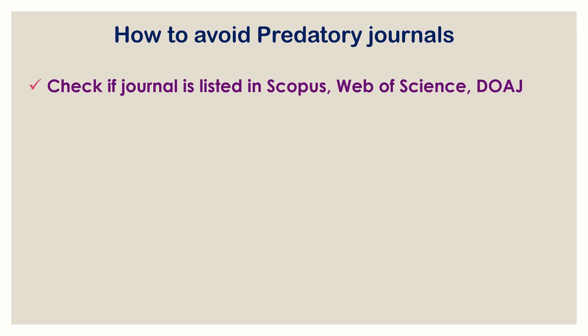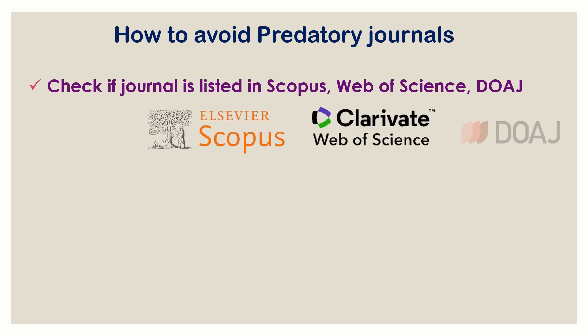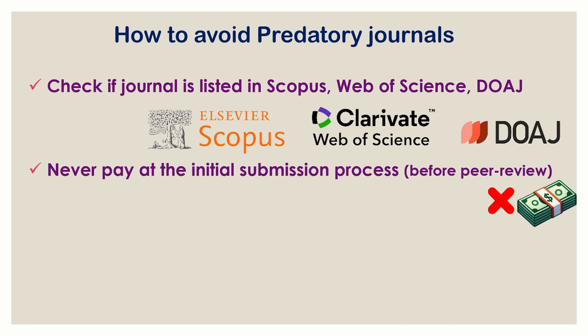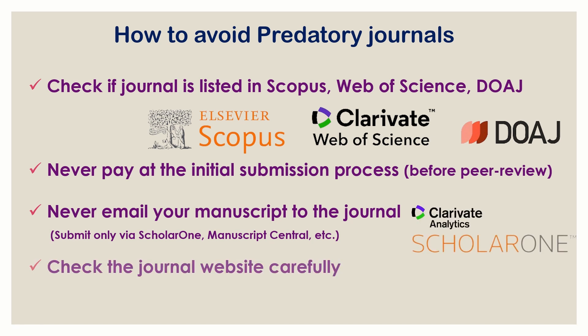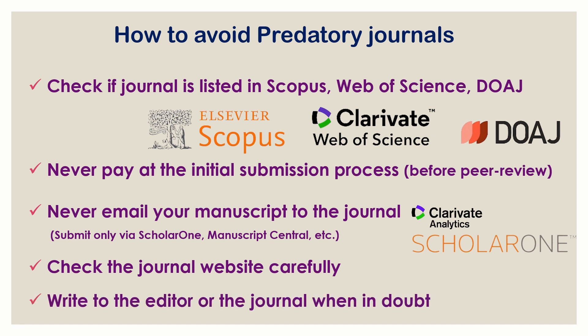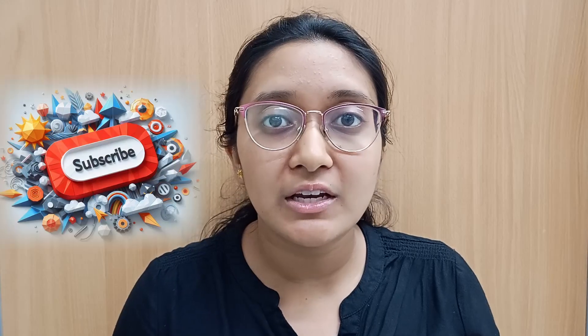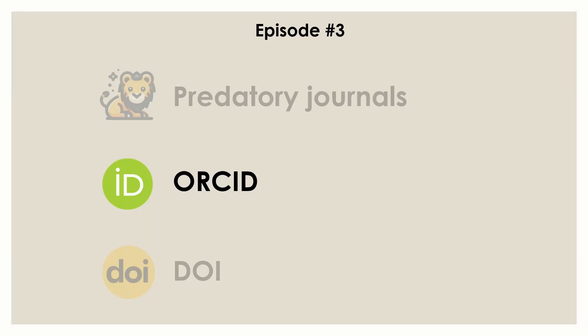Now let's look at how you can identify and avoid predatory journals. Check whether the journal is listed on Scopus, Web of Science (Clarivate), or the Directory of Open Access Journals. Never pay at the initial submission stage before peer review. Never email your manuscript — submit only via platforms like ScholarOne or Manuscript Central. Check the journal website carefully for inconsistencies, spelling mistakes, and grammar errors, and verify that author fees and editorial board members are clearly listed with well-recognized experts in the field.